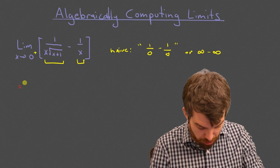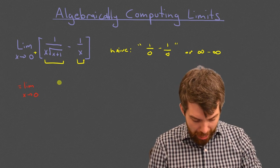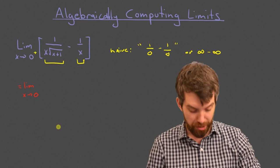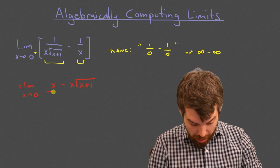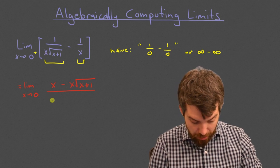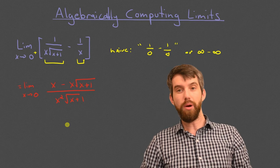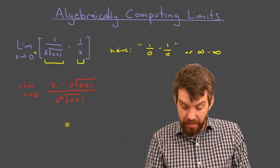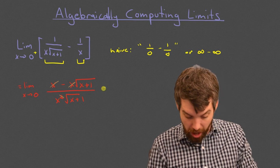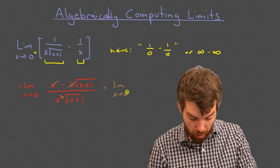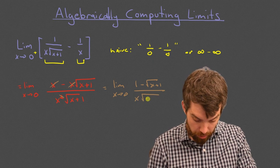I'm going to say this is equal to the limit as x goes to zero, keeping it from both sides. I'll do a cross multiplication to find the lowest common denominator: x on the top, minus x times the square root of x plus 1, all divided by x squared times the square root of x plus 1. I can then cancel an x from both top and bottom and rewrite this as the limit as x goes to 0 of 1 minus the square root of x plus 1, all divided by x times the square root of x plus 1.